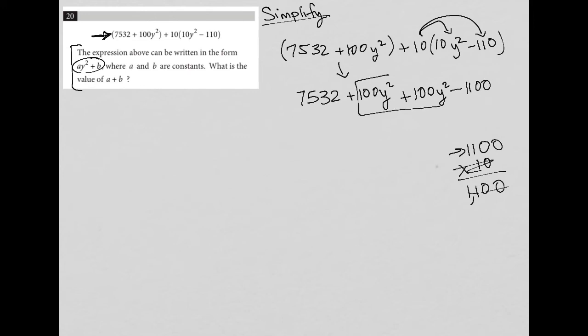So now I have like terms here with my positive 100y². So I'm going to have 200y². And then I have 7532 minus 1100. So let's figure out what that is: 7532 minus 1100. That's 2, 3, 4, and 6. So I have 200y² + 6432.